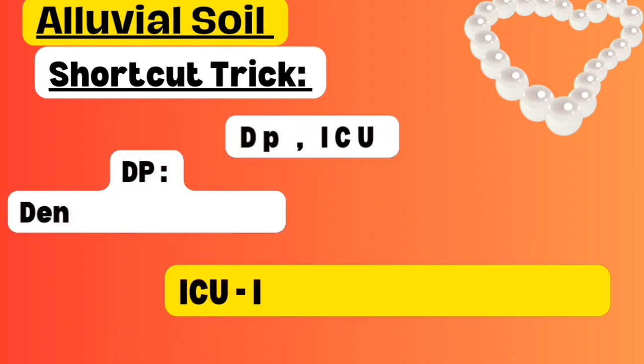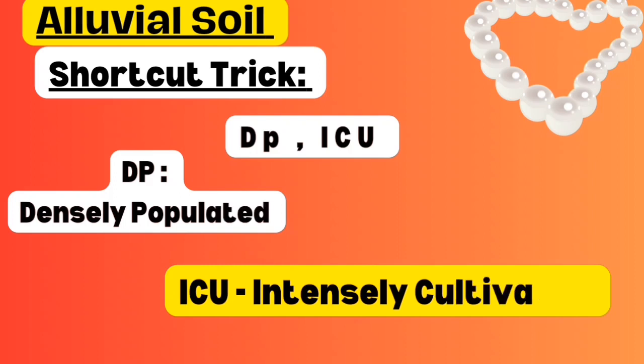Next shortcut is DPICU. When you keep changing your DP, your mom and dad will beat you and you'll be admitted to the ICU. DP stands for densely populated - alluvial soil is very fertile so the region is densely populated. ICU stands for intensely cultivated. So DPICU means the alluvial soil region is densely populated and intensely cultivated.